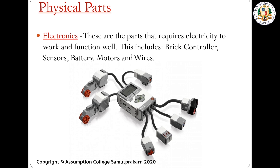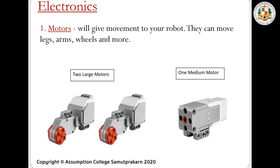The electronics are the parts that require electricity to work and function. This includes the brick controller, sensors, battery, motors, and wires. Without electricity or without battery, these parts will not work. For the motors, we have two large motors and one medium motor. Motors give movement to your robot — they can move legs, arms, wheels, and more.